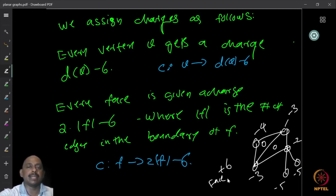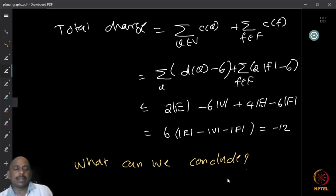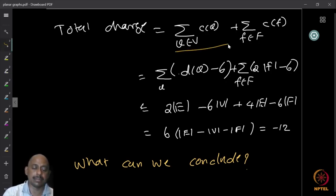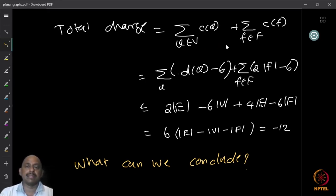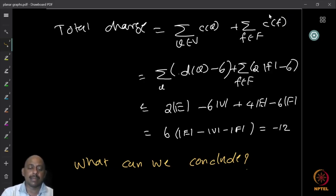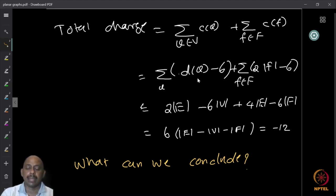This is how you assign charges to the graph. Now I want to look at the total charge. The total charge is the sum of all vertex charges plus all face charges: summation over all vertices of (degree of v minus 6) plus summation over all faces of (twice the length of f minus 6). The sum of degrees over all vertices equals 2e by a well-known result, so the vertex part gives 2e − 6v.